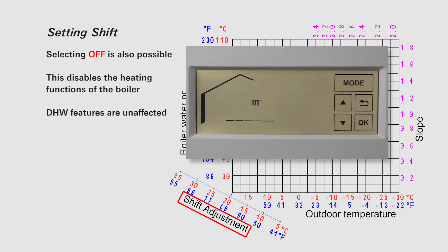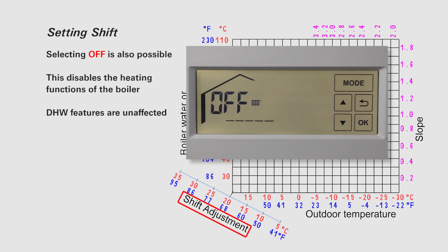Selecting an off value is also possible. This disables the heating functions of the boiler. The DHW features are unaffected.